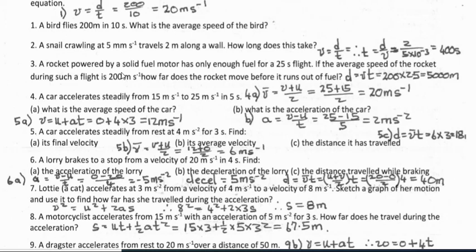Question 3: a rocket powered by a solid fuel motor has only enough fuel for a 25-second flight. If the average speed is 200 meters per second, how far does it move before running out of fuel? Distance equals average speed multiplied by time: 200 times 25 equals 5,000 meters.